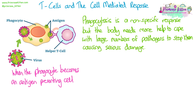It starts with the phagocyte becoming what we call an antigen presenting cell. It takes the antigens from the pathogen and presents them onto its cell surface membrane — it ingests the pathogen, breaks it down, removes the antigens, and puts those antigens onto its own membrane.